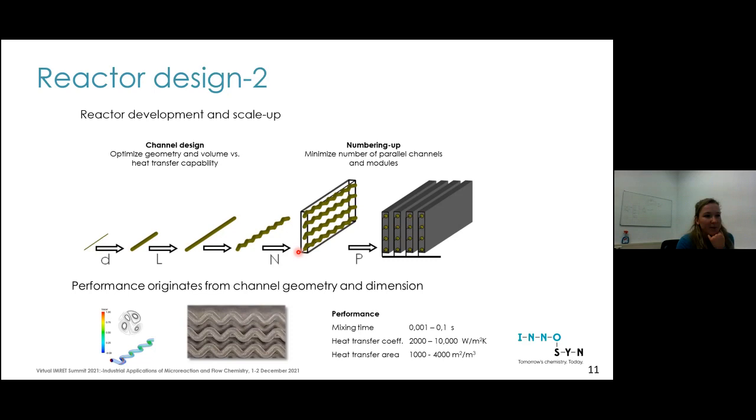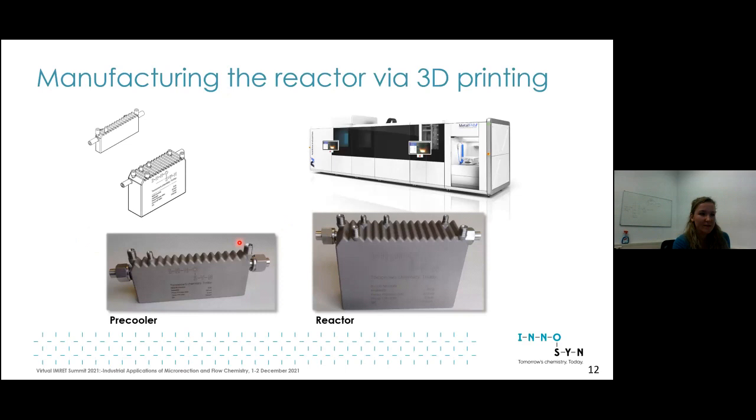We form it in zigzag because in zigzags, due to secondary flow patterns created at each bend, you improve mixing further. It's an interplay with pressure drop and mixing efficiency. By making a zigzag you slightly improve reactor performance.